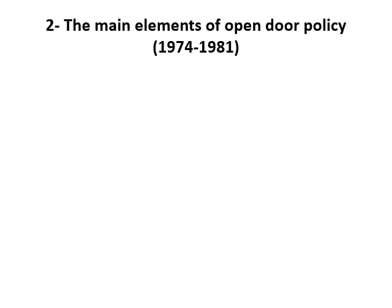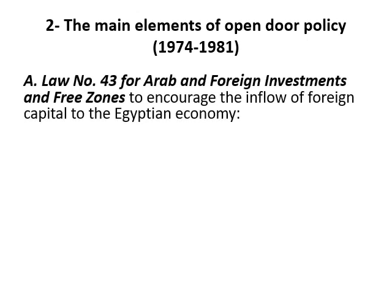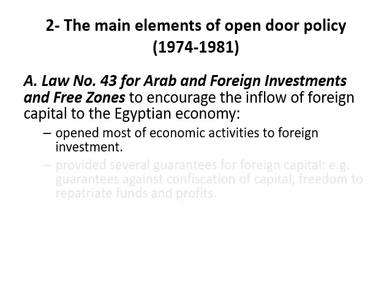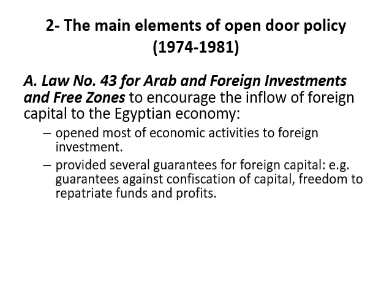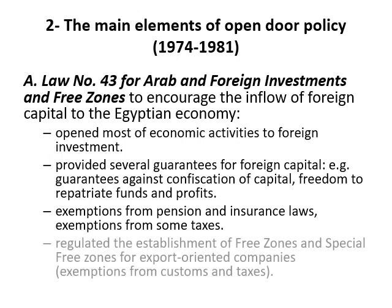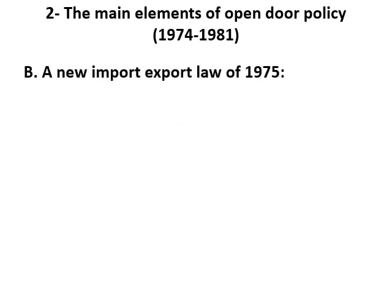Moving to the second point — the main elements of the open door policy. The policy had three main elements. The first element was Law Number 43 for Arab and foreign investment and the free zones. That law was issued to encourage the inflow of foreign capital to the Egyptian economy. It opened most economic activities to foreign investment and provided several guarantees for foreign capital, including exemption from pension and insurance law and exemption from some taxes. It also regulated the establishment of free zones and special free zones for export-oriented companies.